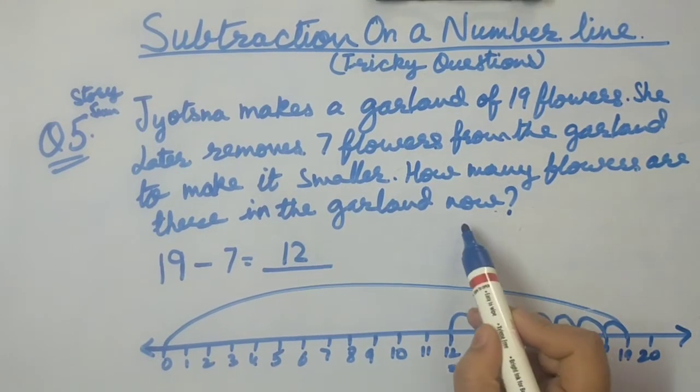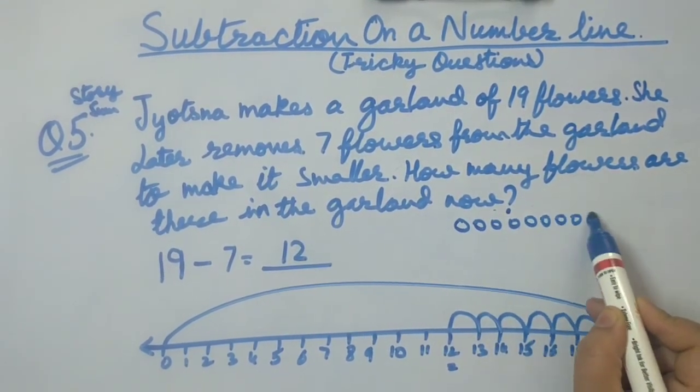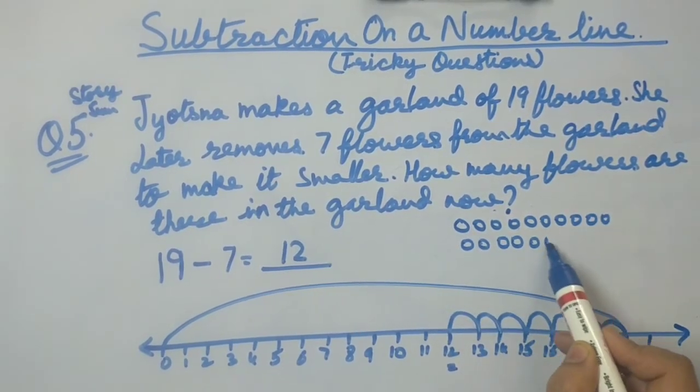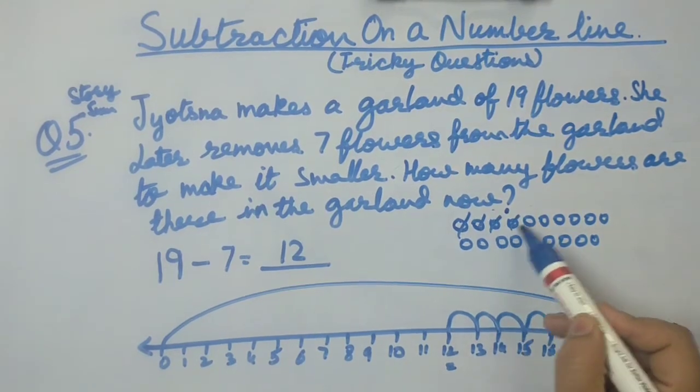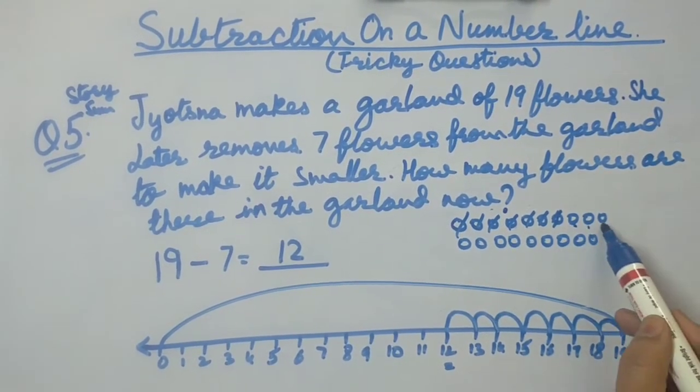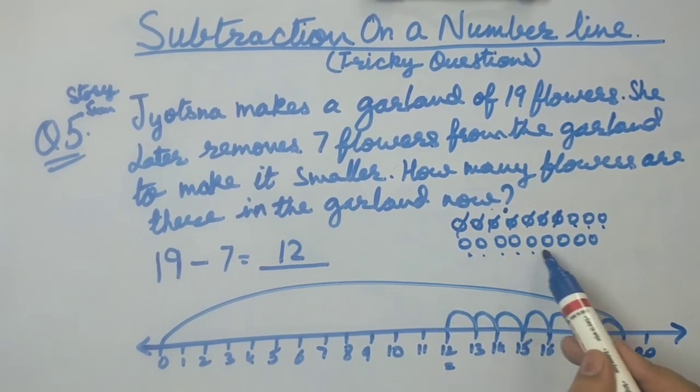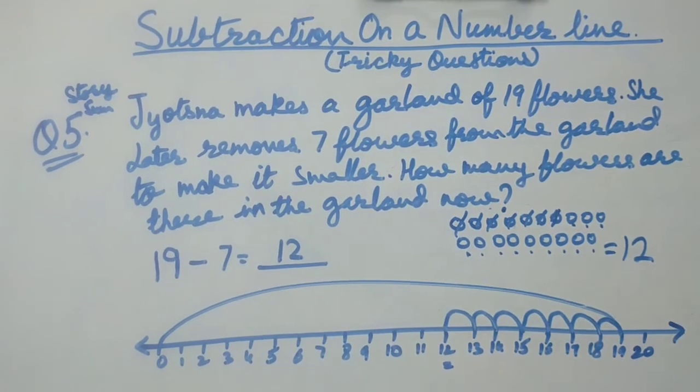Checking on circles method. Drawing circles 1 through 19. Cutting 7 circles. We have 12 flowers.